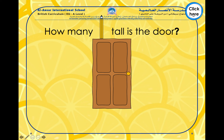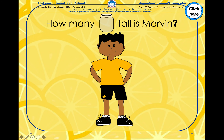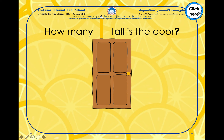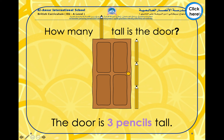Let's see how many pencils long the door is. Count with me: one, two, three. The door is three pencils tall. Can you figure out why we use less pencils and more blocks? We use less pencils because the pencils are taller than the blocks, so we will need fewer pencils to measure the door.